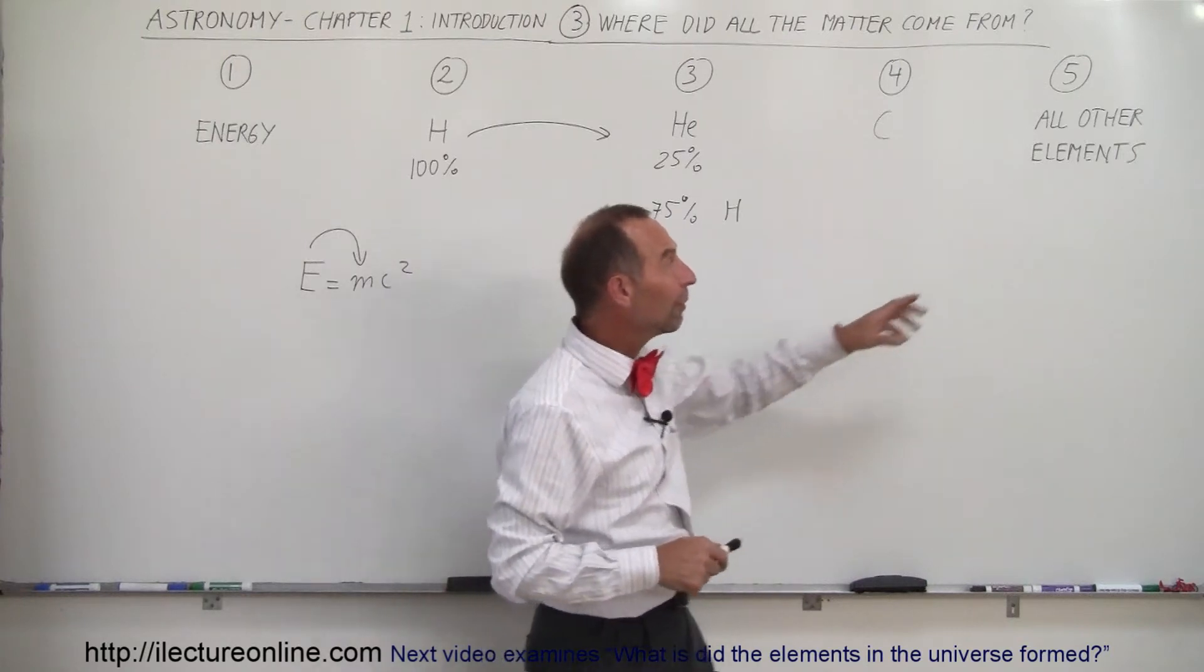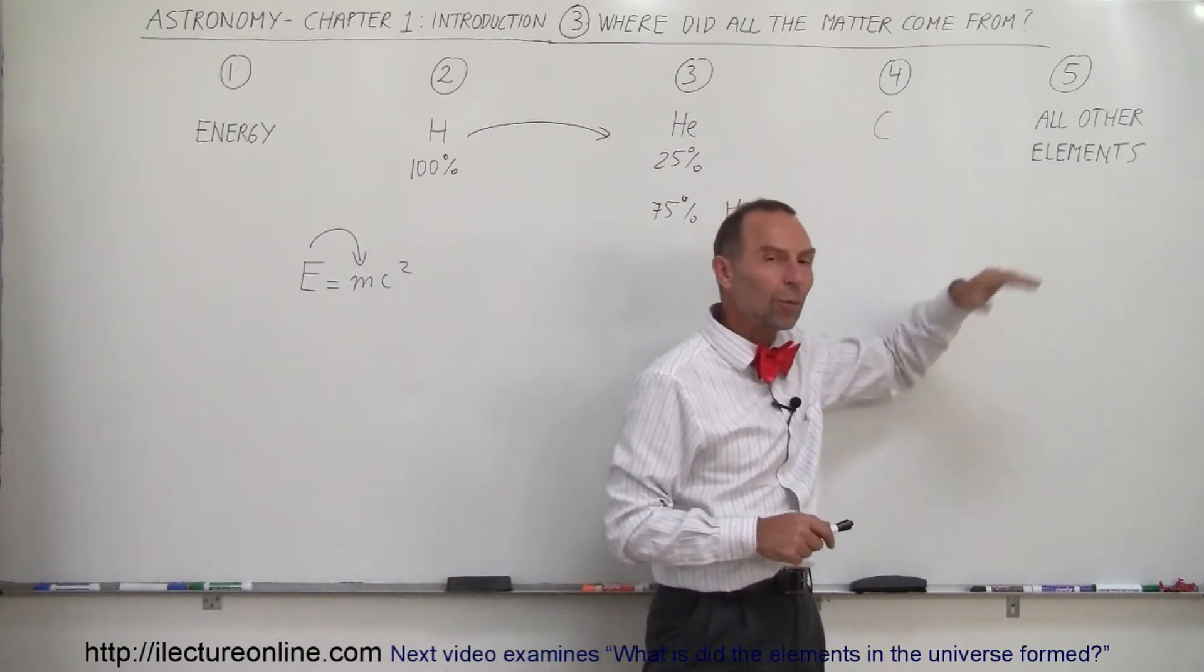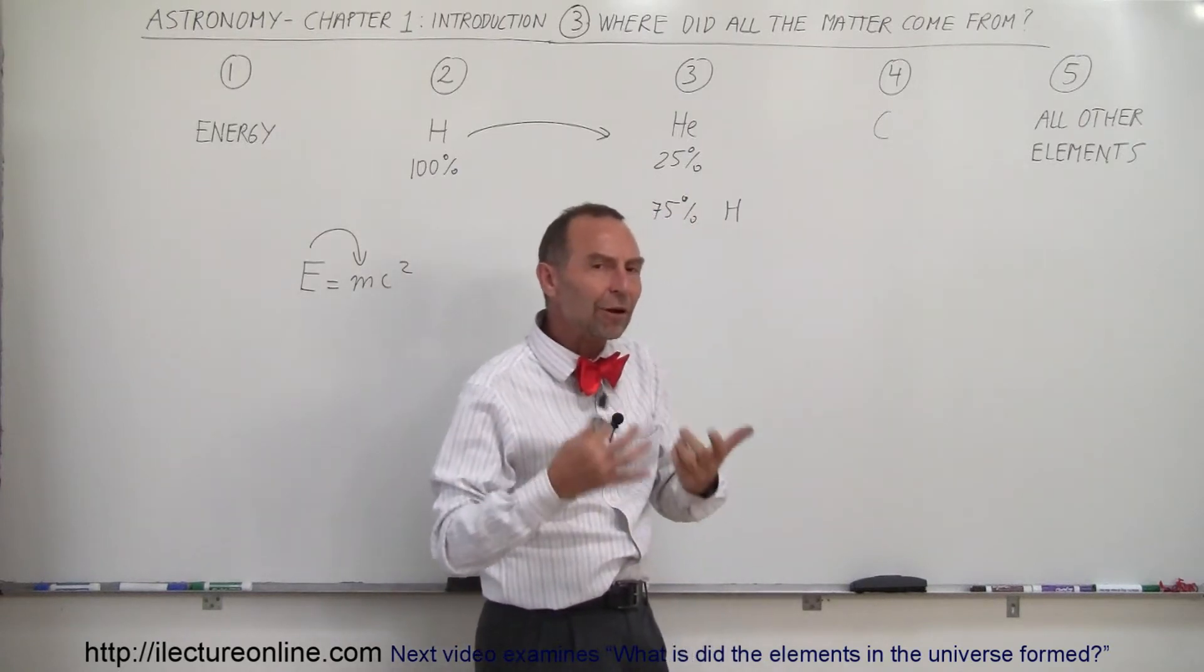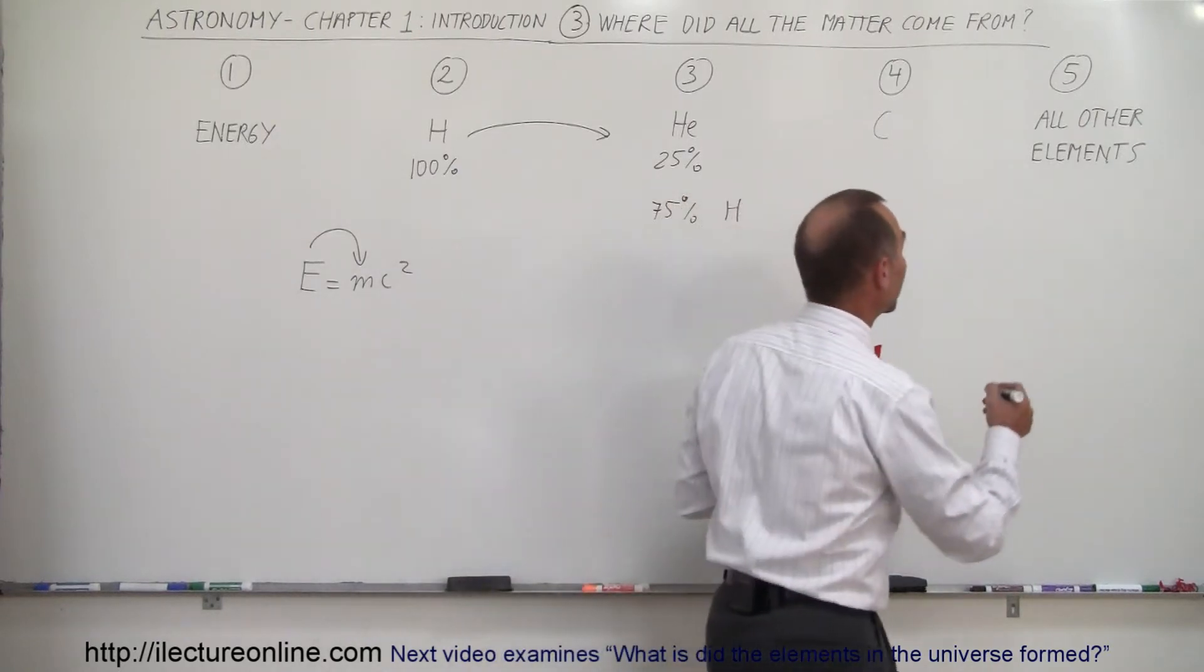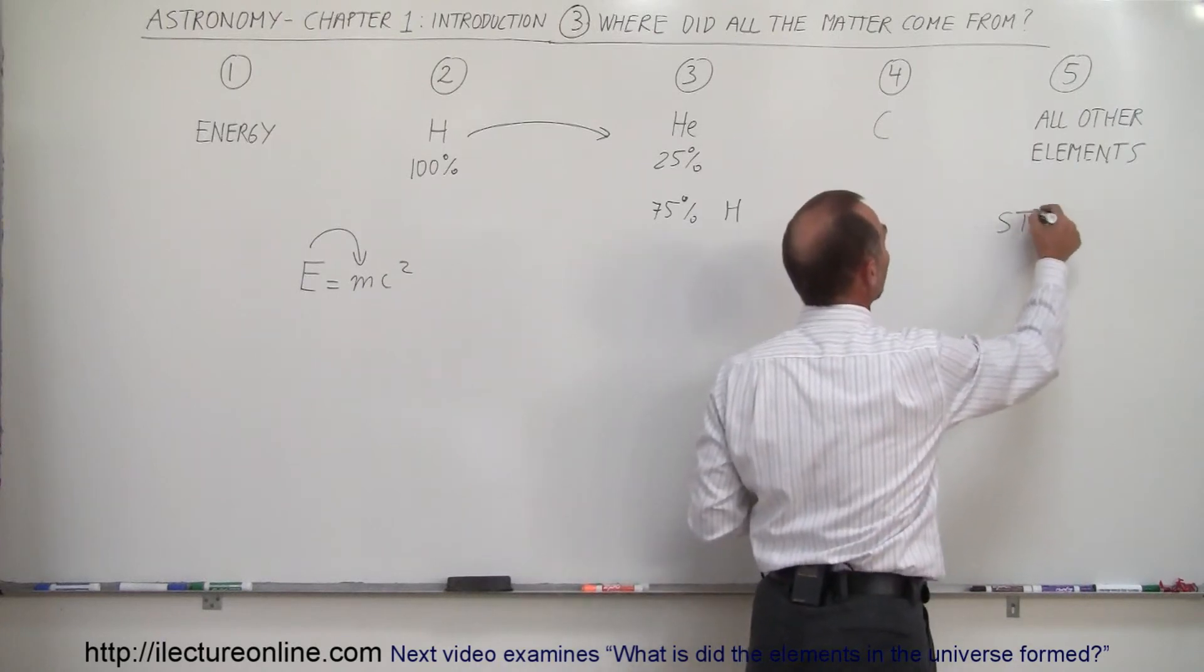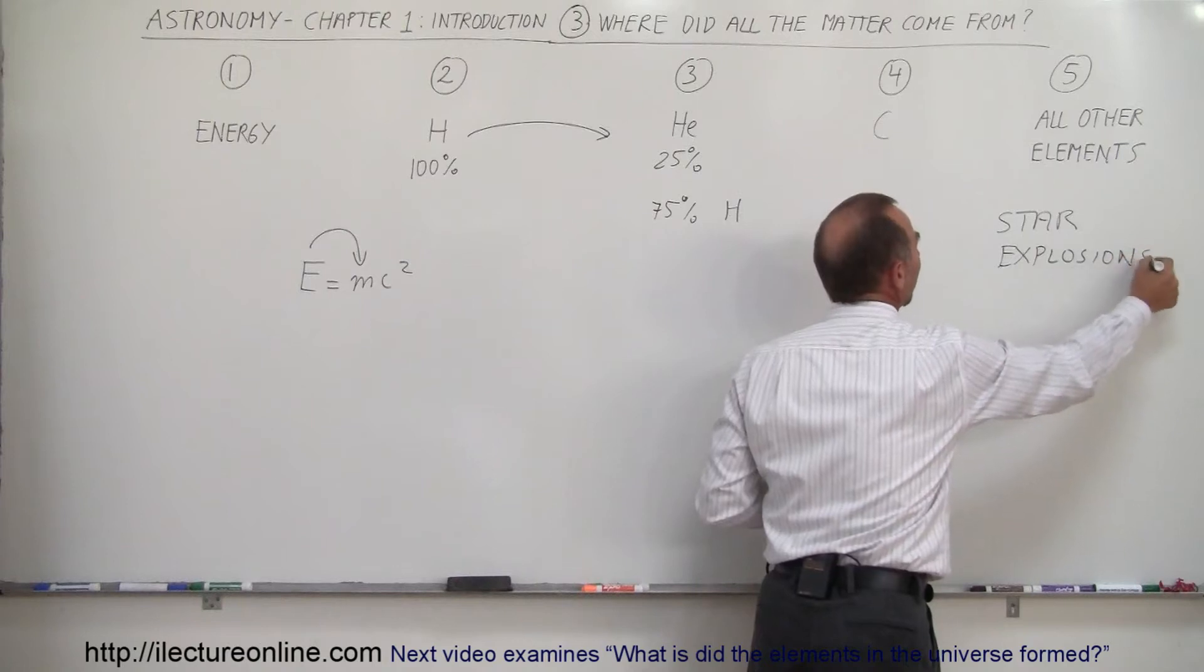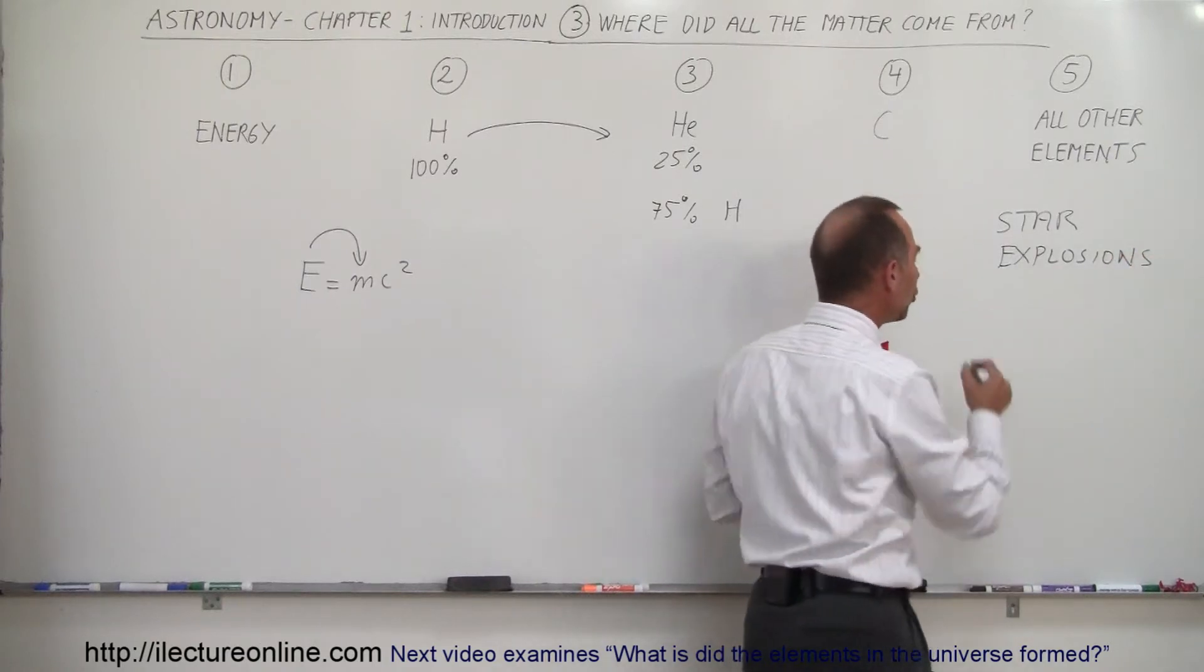Well, it turns out there's a very special process where all the other elements on the periodic table are created. And they're created in a very catastrophic process. They're created in star explosions. Now, what kind of star explosions are they? They're called supernovas.